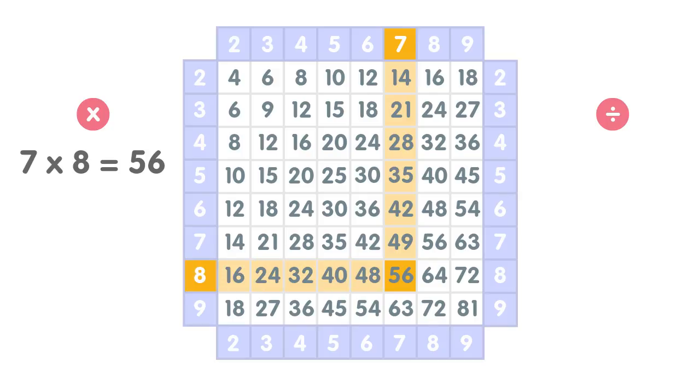Tables come in pairs, so if you know seven times eight is 56, you also know that eight times seven is also 56. But that's not all you know when you know the multiplication—you also know the division.